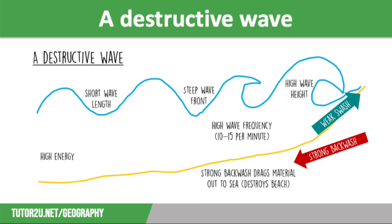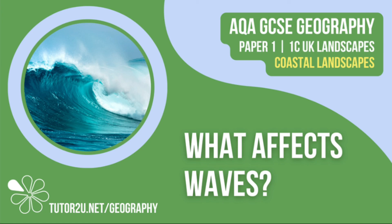On the other hand, destructive waves have a strong backwash compared to swash, a short wavelength, but a very high wave height. They are much more frequent, with 10 to 15 waves per minute. The waves break with a lot of energy concentrated in a small area, so can comb the beach of material. They are found in more exposed areas of coastline and are more common in winter than summer. They remove material from the beach — hence being called destructive. That concludes this Tutor2U revision video focusing on what affects waves. Thank you for watching.